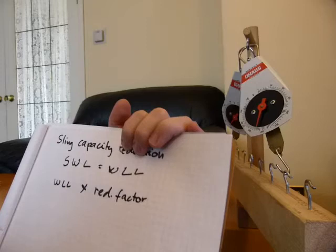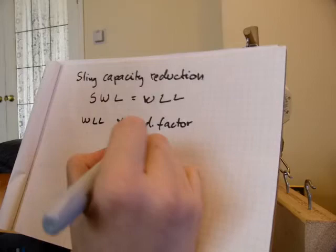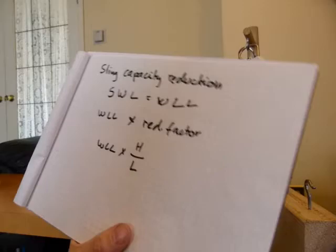This reduction factor has to do again with this angle, but we can't measure angle—nobody's walking around with a compass and a protractor. So what we can do is work with the height, the headroom, and the length. You divide the headroom with the length of the sling to get this reduction factor, and then you multiply it by the working load limit.